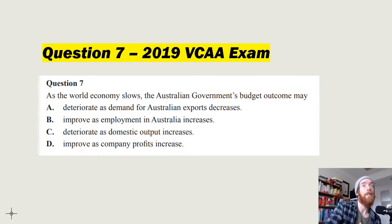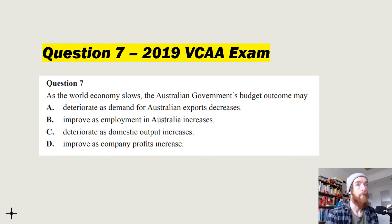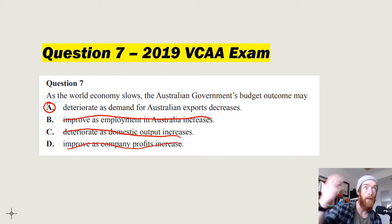Question 7 from the 2019 VCAA exam: 'As the world economy slows, the government's budget outcome may...' Options include: A — deteriorate as demand for Australian exports decreases; B — improve as employment increases; C — deteriorate as domestic output increases; D — improve as company profits increase. If the world economy slows, Australia slows too. Employment won't increase, output won't increase, profits won't improve. Demand for Australian exports will decrease, so the budget will deteriorate. Answer: A.